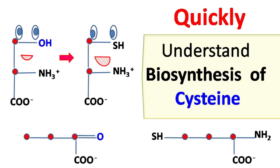Hey everyone, Quick Biochemistry Basics here. Let's talk about biosynthesis of cysteine. Amino acid cysteine is a sulfur-containing amino acid and it plays an important role in disulfide bond formation between the polypeptide chain.